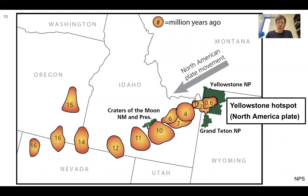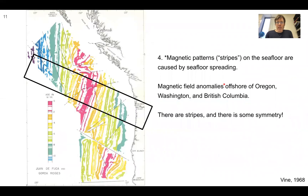This shows the current direction of plate motion is to the southwest of the North American plate. It also means that in the future, the activity of Yellowstone is going to be somewhere toward Montana. Number four: magnetic patterns or stripes on the seafloor are caused by seafloor spreading.